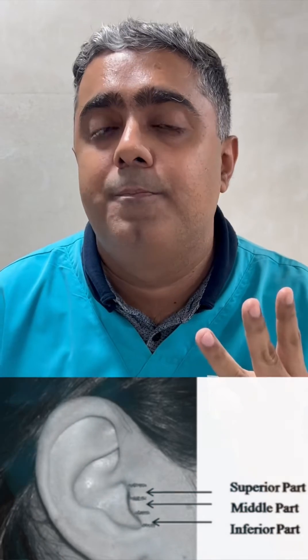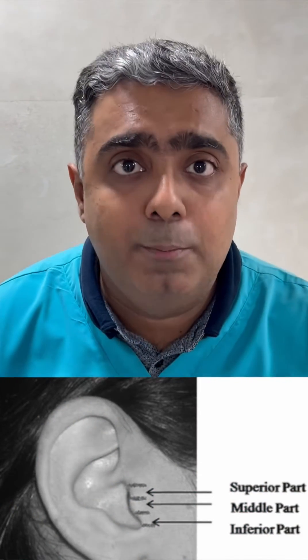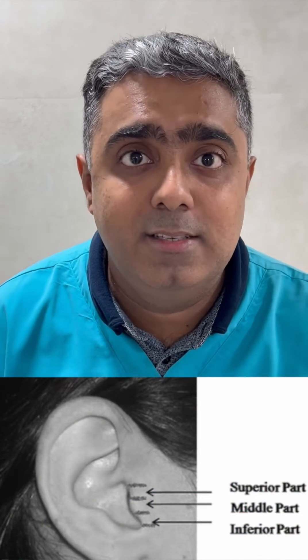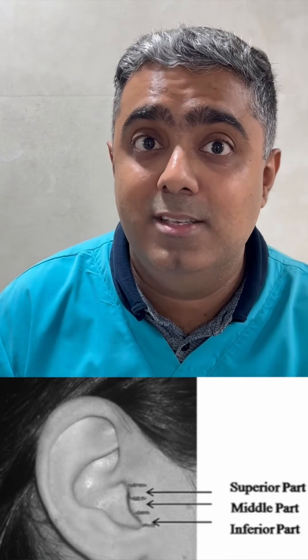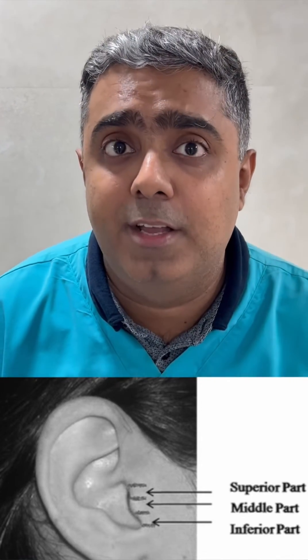The confusing part is: at which point on the tragus — the posterior determinant of the Camper's plane — would you choose? There are three points: the first is the superior border of the tragus, the second is the middle of the tragus, and the third is the inferior border of the tragus.